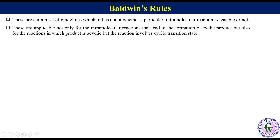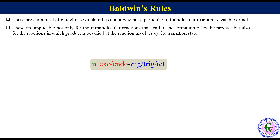Baldwin's Rules classify intramolecular reactions based on: the actual ring size of the product, whether the bond being broken is exo (outside the ring) or endo (inside the ring), and the hybridization of the electrophilic carbon. Based on ring size, position of bond being broken, and hybridization of the electrophilic atom, we can write a general name for the intramolecular reaction as N-exo or endo-dig, trig, or tet, where N is the ring size of the product or transition state.